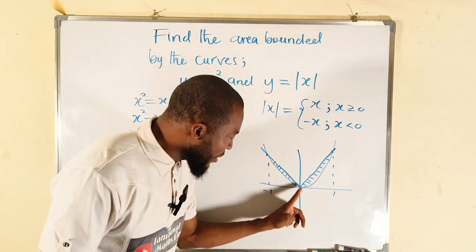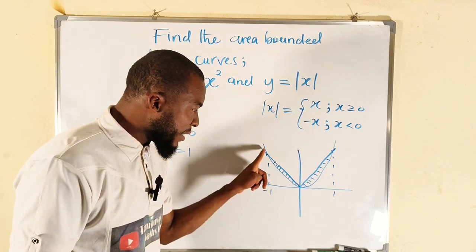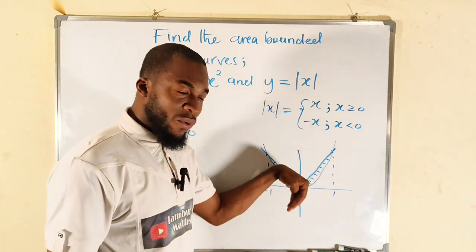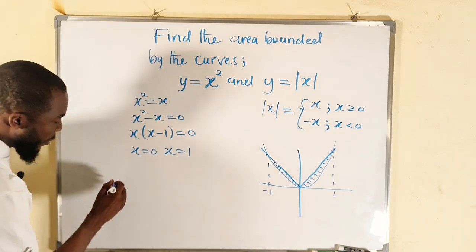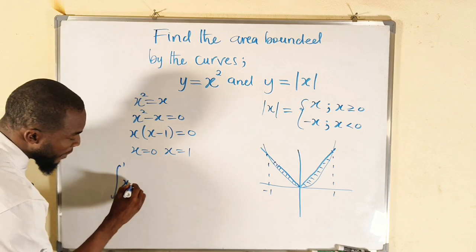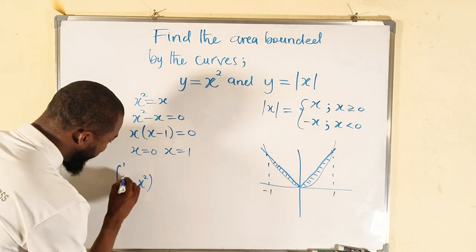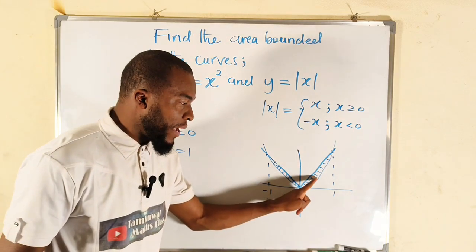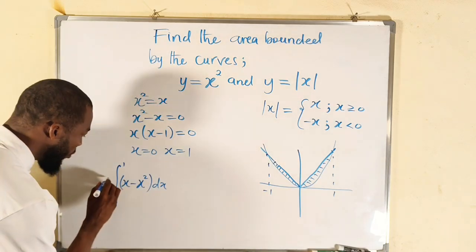So we have this point to be one, therefore this point will be negative one. And if you observe, this line which is for x—remember this is negative x, but we are going to consider this one which is x—is above the curve x squared. Therefore the area will be from zero down to one of x minus the function below, which is x², with respect to x. Remember that this is just for this particular area, but we are talking about the two areas. Because they are identical, we multiply by two, and hence this is said to be the total area.